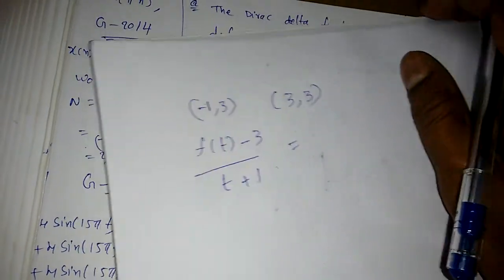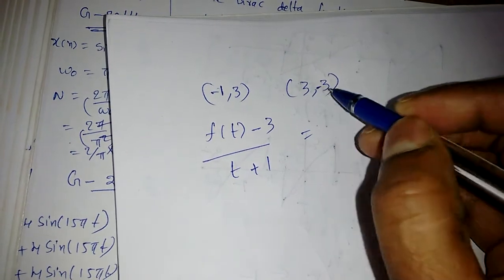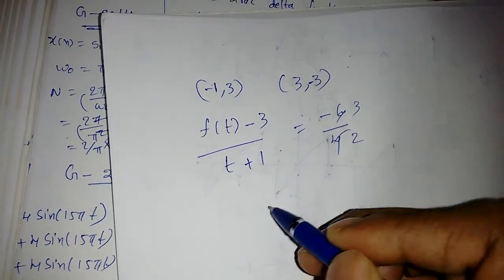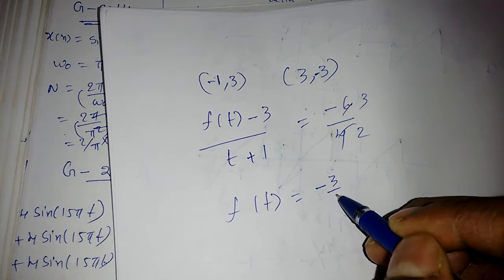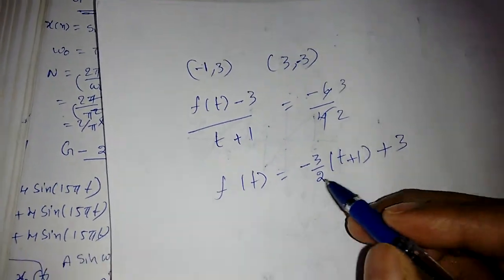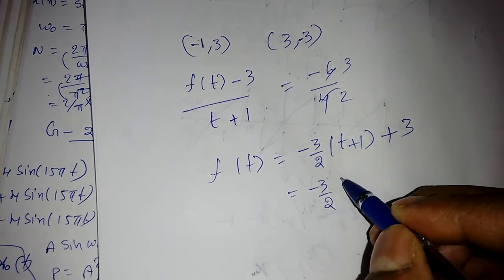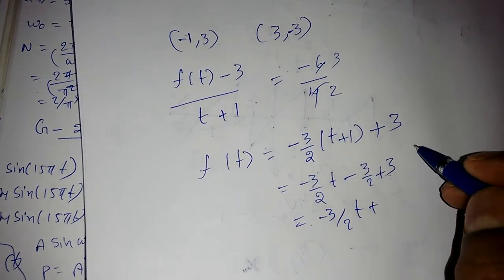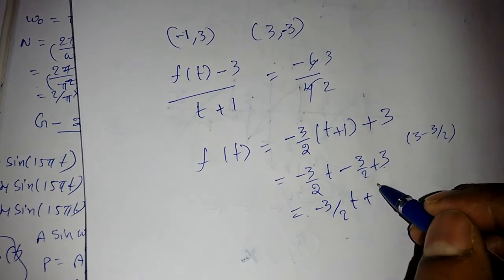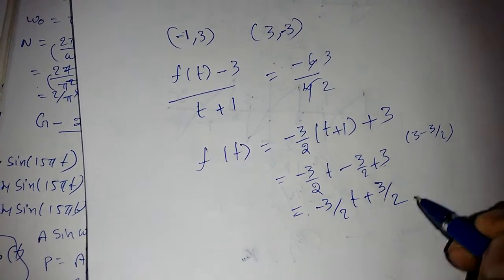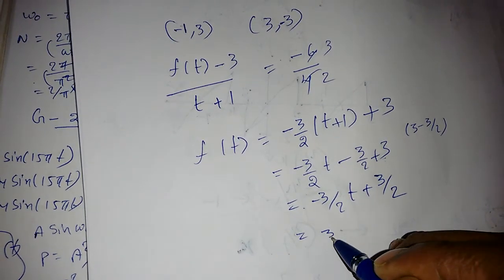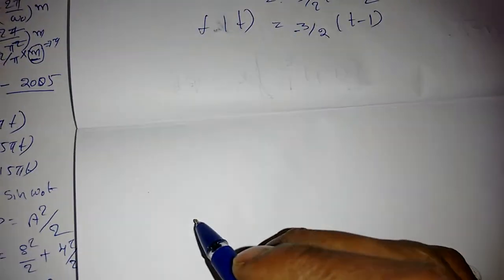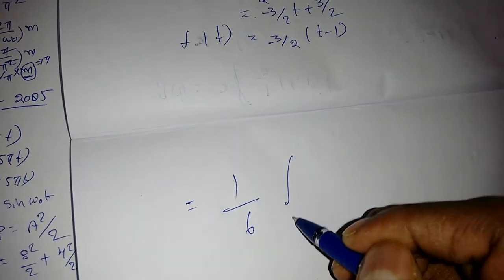Using the two-point line equation: (y minus y1)/(x minus x1) = (y2 minus y1)/(x2 minus x1). We get (y minus 3)/(t minus (minus 1)) = (minus 3 minus 3)/(3 minus (minus 1)) = minus 6/4 = minus 3/2. Solving, f(t) = minus 3/2 times (t plus 1) plus 3 = minus 3t/2 minus 3/2 plus 3 = minus 3/2 times (t minus 1). So g(t) = minus 3/2 times (t minus 1).